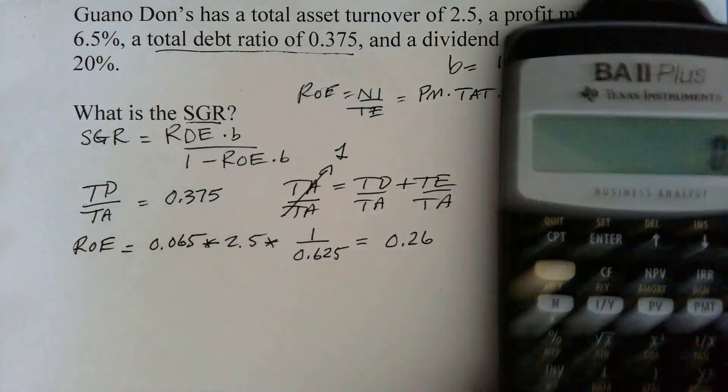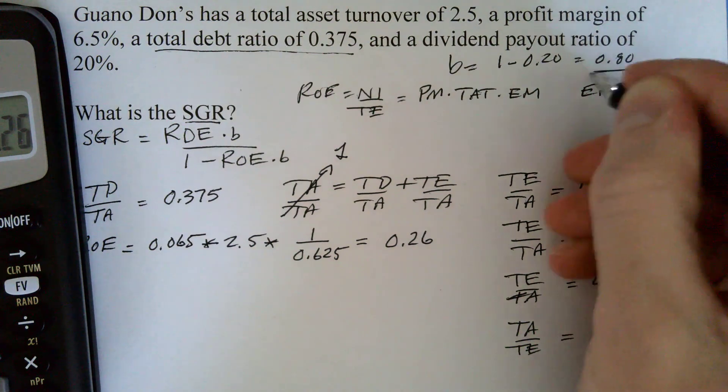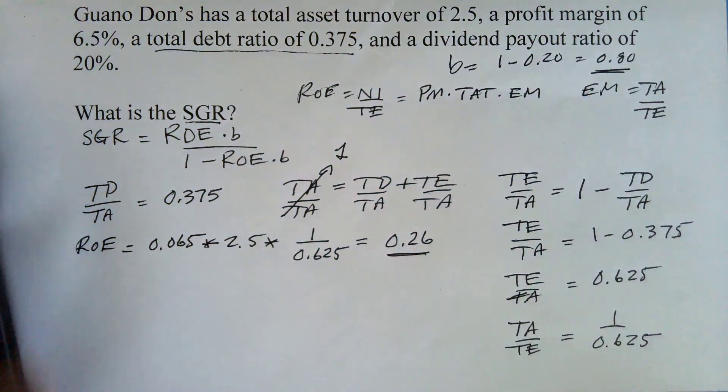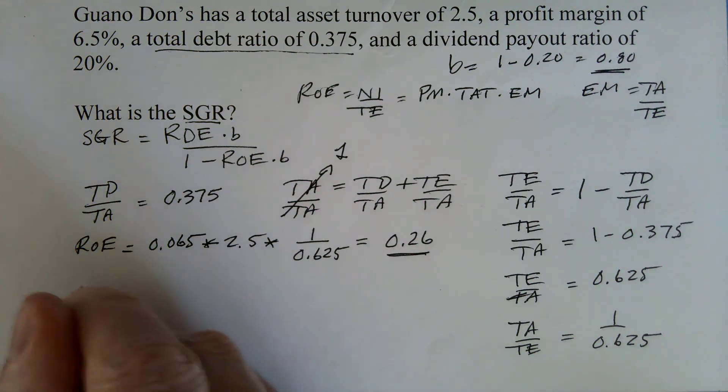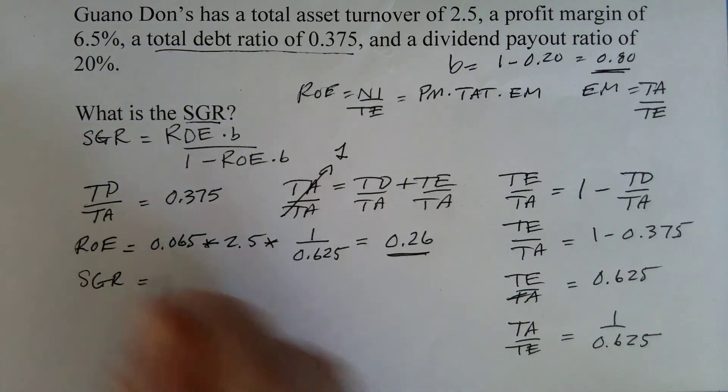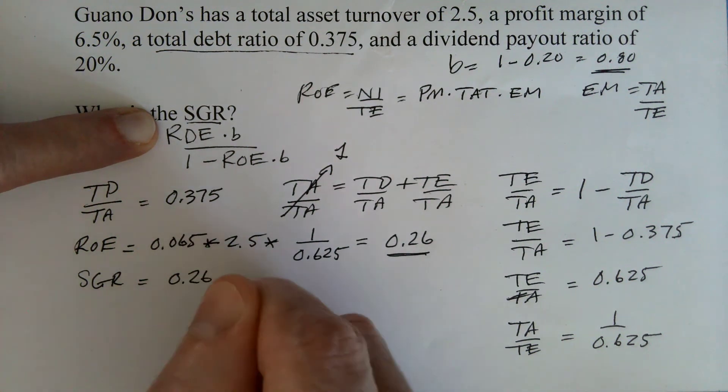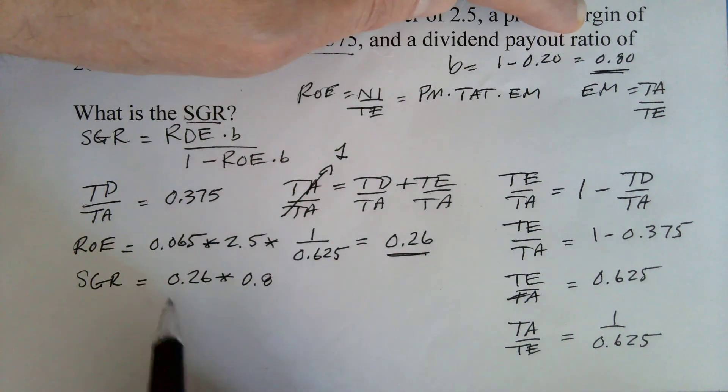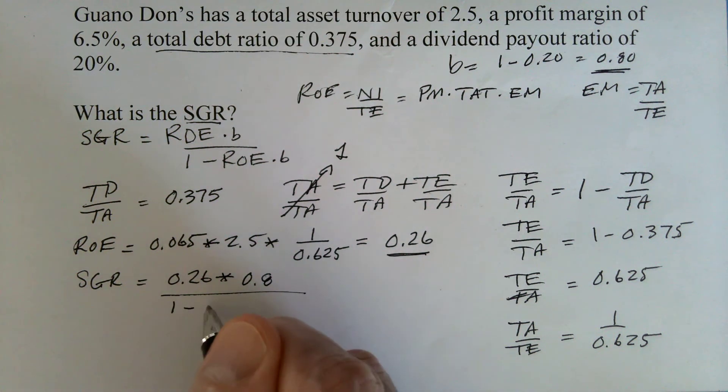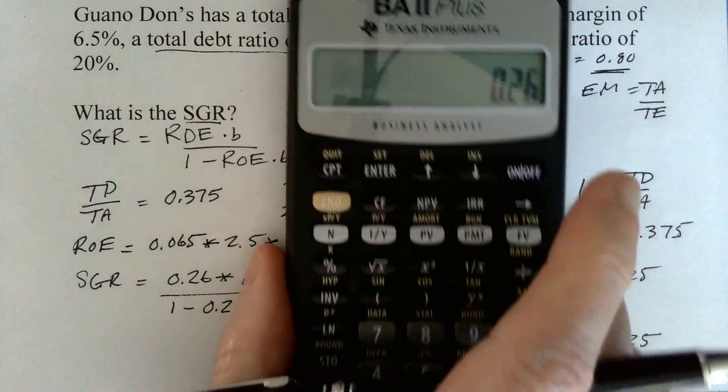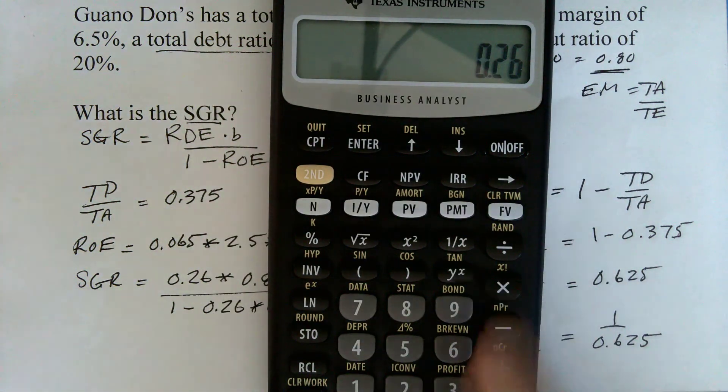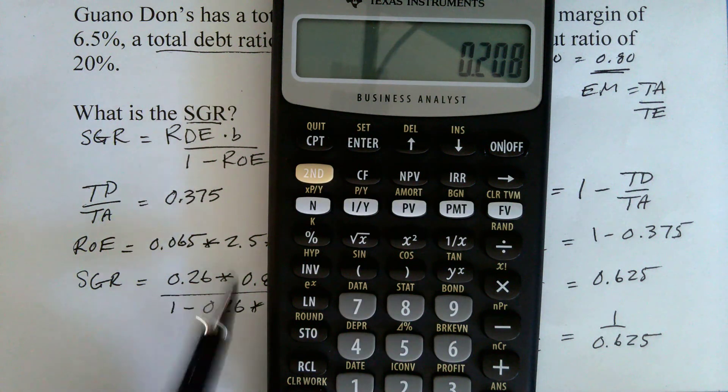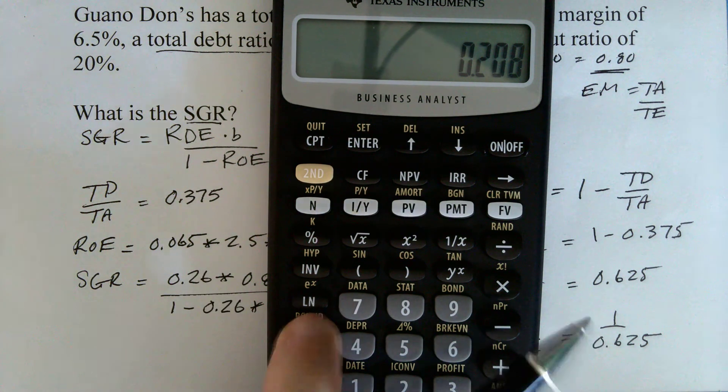Now, we can go ahead because we have all the pieces of the puzzle. We know that B is 0.8 and we know that ROE is 0.26. We can say that SGR is equal to ROE 0.26 multiplied by B 0.8 divided by 1 minus 0.26 times 0.8. Now, let's talk about how we're going to do this in the calculator. I'm going to say times 0.8 equals, and so that takes care of this part right here.